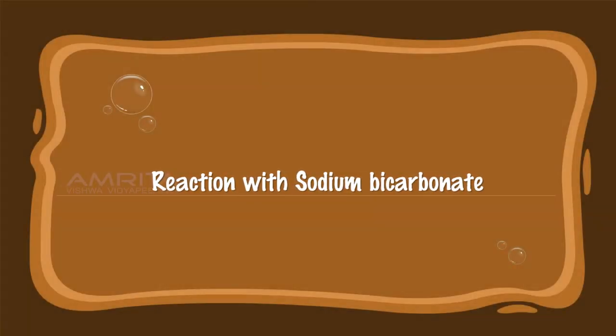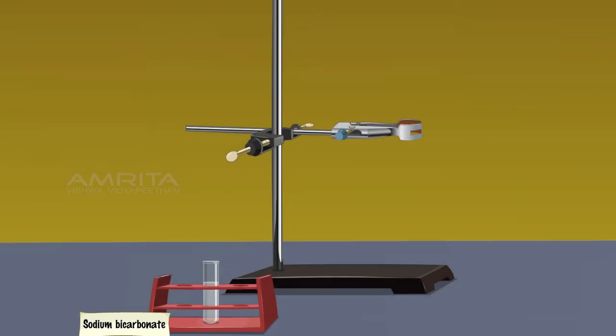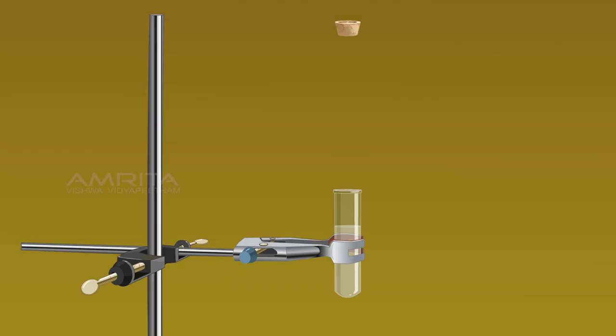Reaction with sodium bicarbonate: Take a small quantity of sodium bicarbonate in a boiling tube. Clamp the boiling tube to a stand. Close the mouth of the boiling tube with a double-bored cork. Insert a thistle funnel into the tube through one of the holes in the cork.